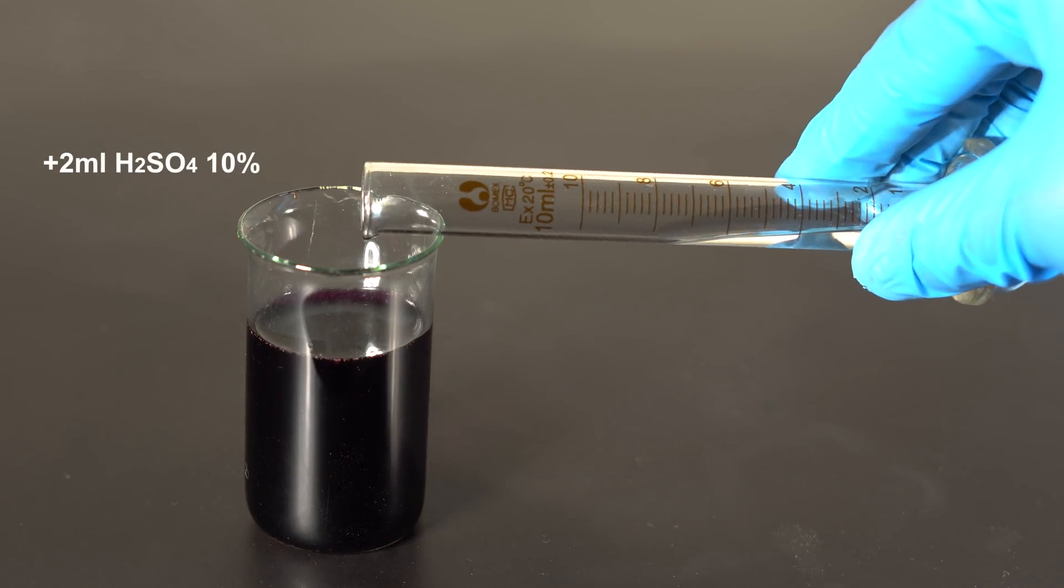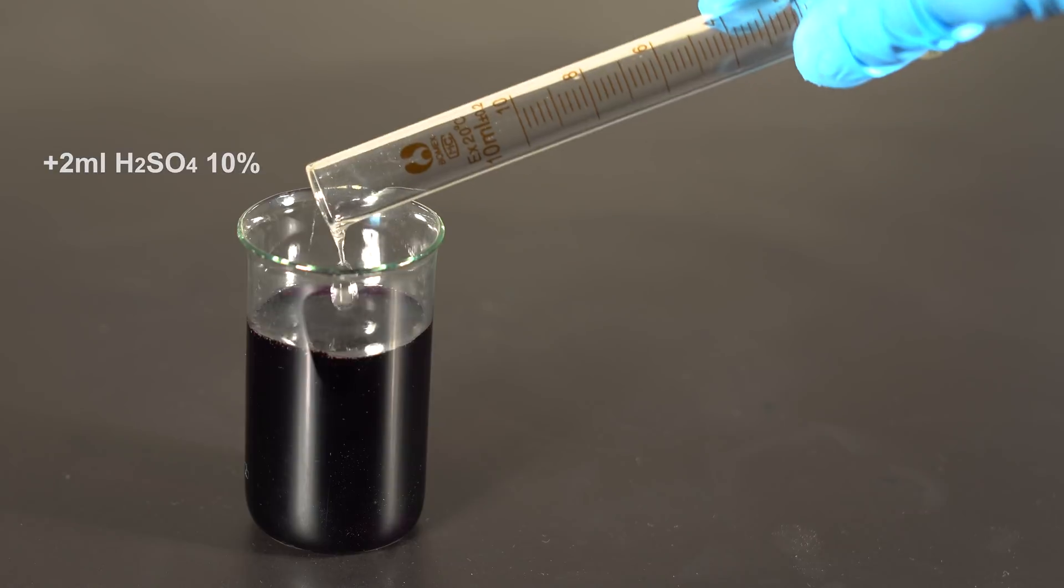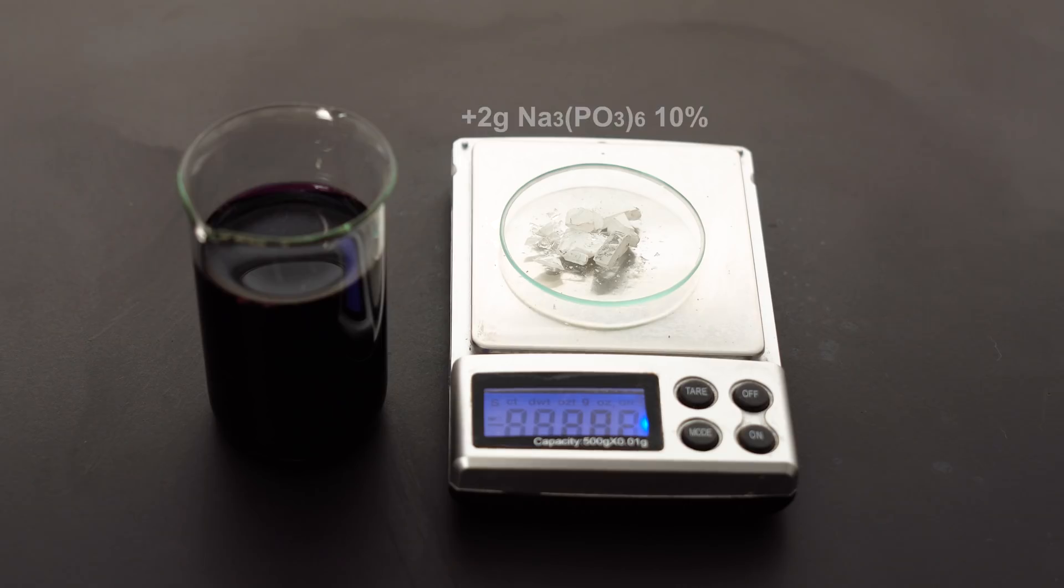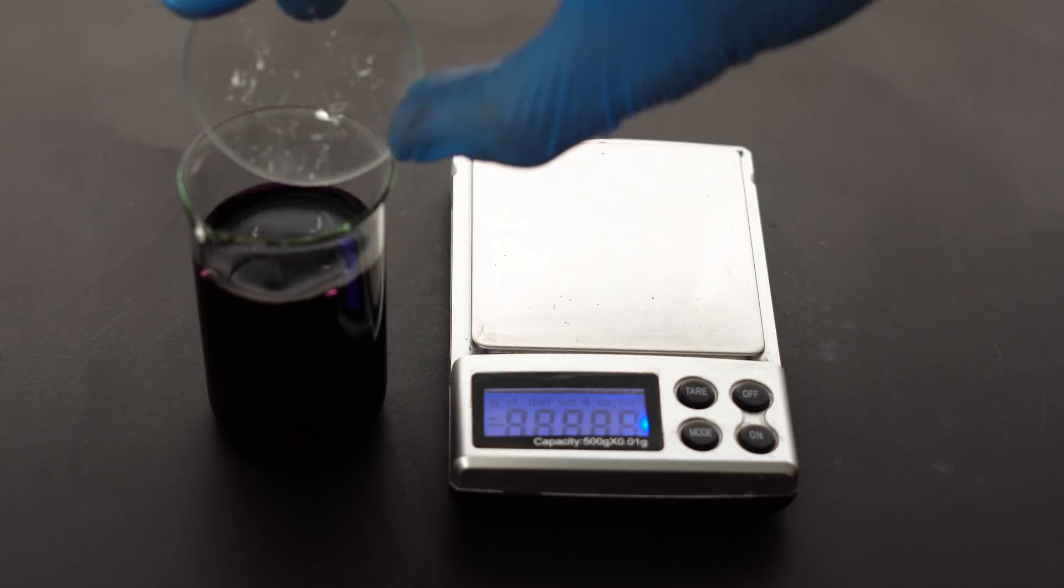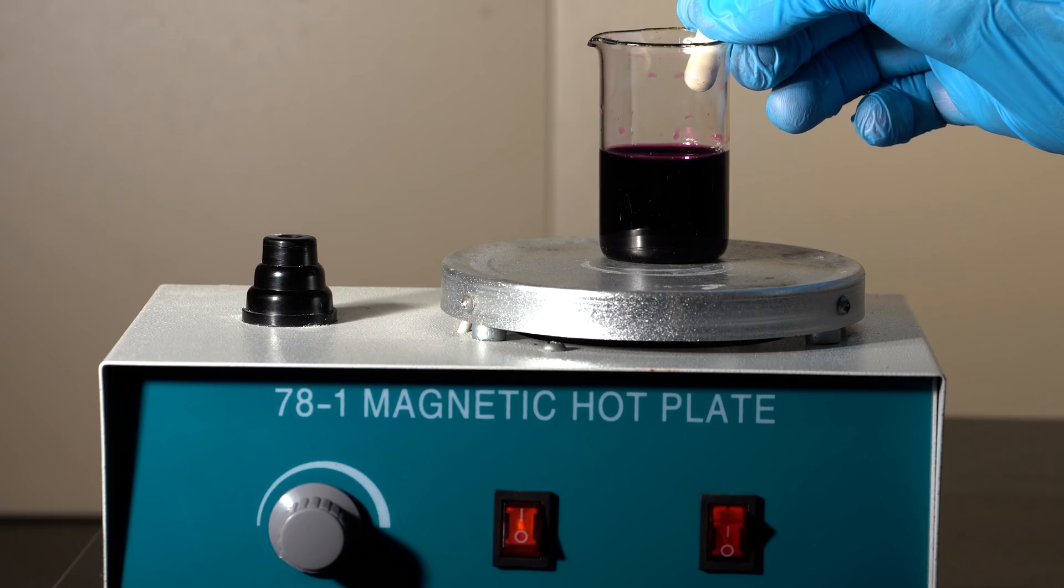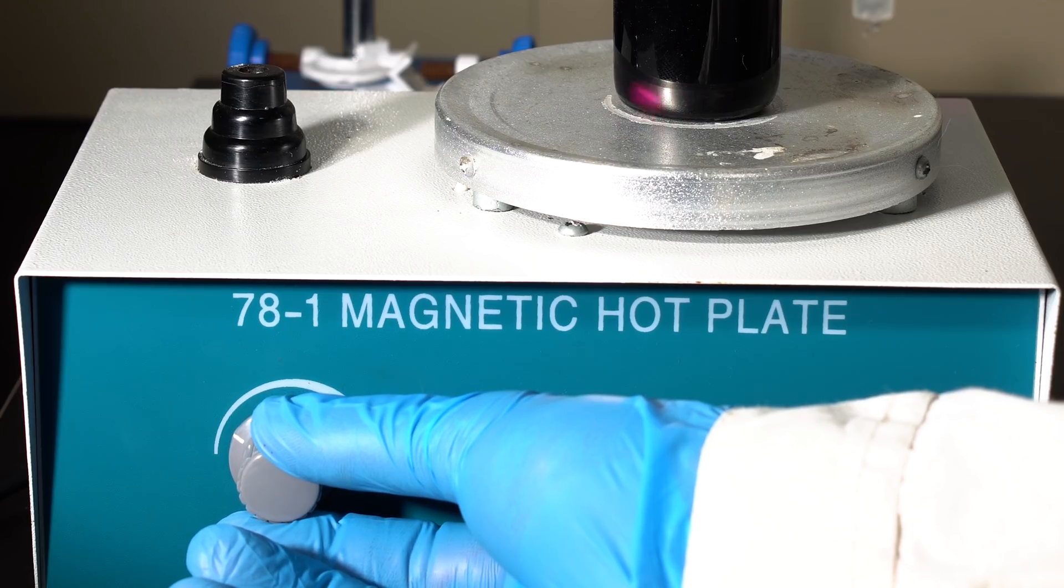Also adding a couple milliliters of 10% sulfuric acid and a couple grams of sodium hexamethophosphate, and let it all stir in a magnetic stirrer.